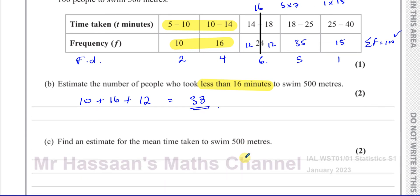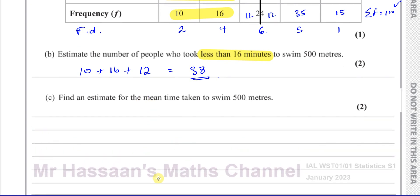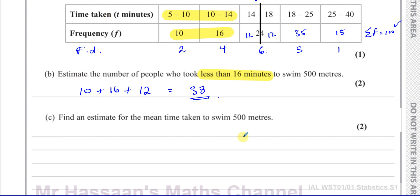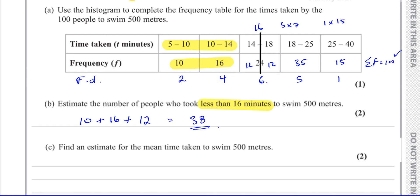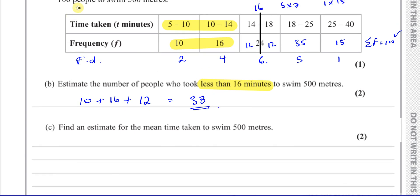Part C says: find an estimate of the mean time taken to swim 500 metres. The mean from a frequency table — we know how to do that. A lot of times in S1 they give you some of the information you need, but here they haven't. So we're going to use the frequency table. The mean is going to be the sum of all the times divided by the number of swimmers, which is 100.